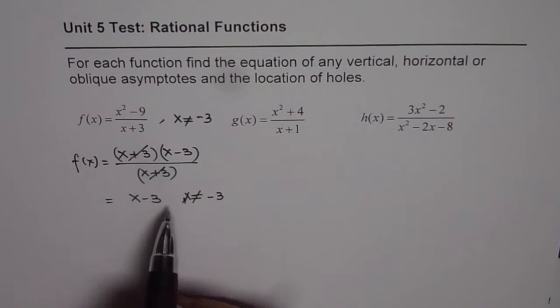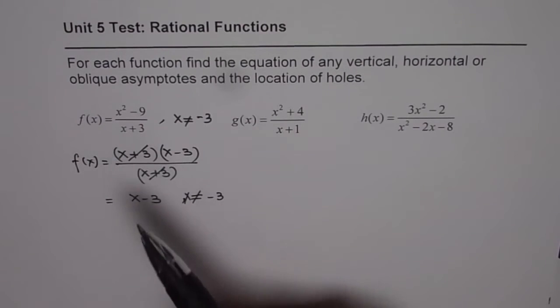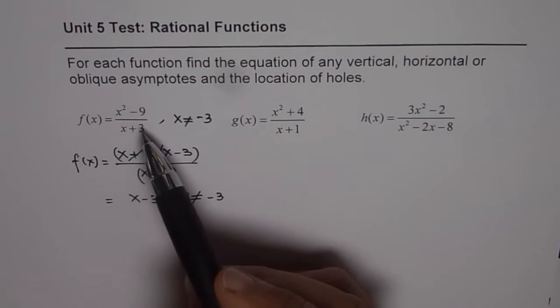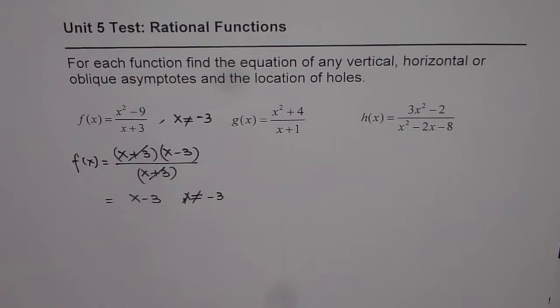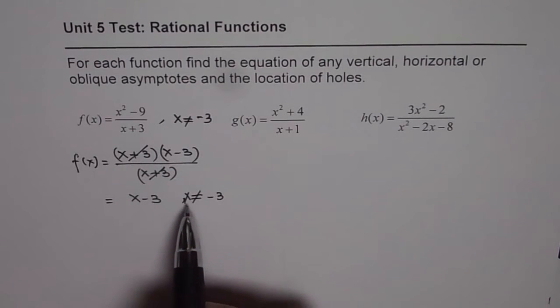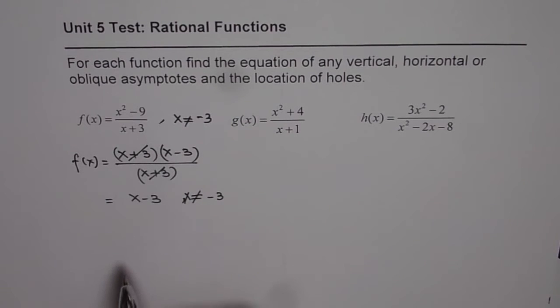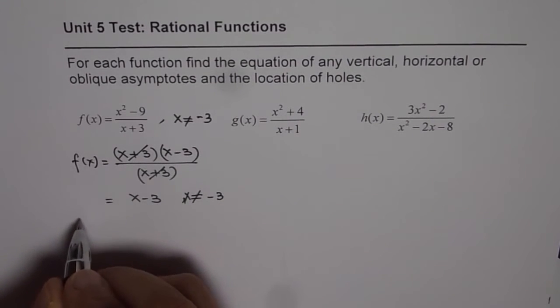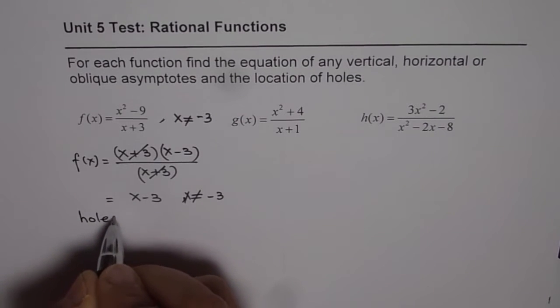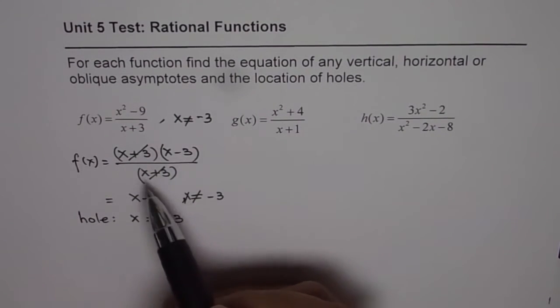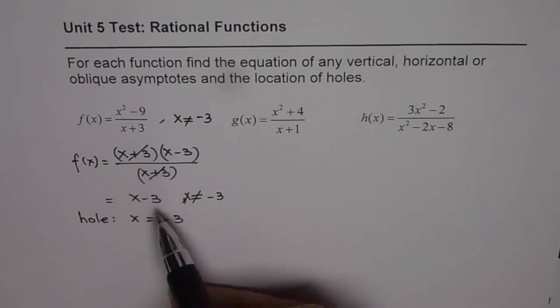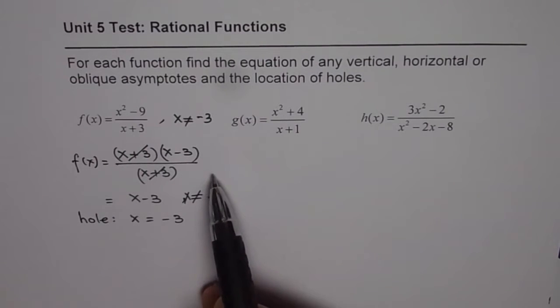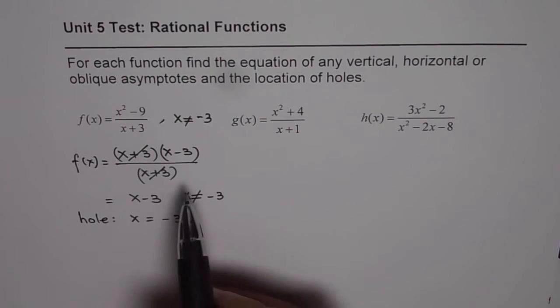That means there is no oblique asymptote. So we cannot really conclude to the decision that whenever the degree is one higher, we have an asymptote. Since the function is actually x minus 3 where x is not equal to minus 3. Now what does that mean? It really means here that we have a hole at x equals to minus 3. So the type of discontinuity here is a hole which is at x equals to minus 3. So whenever you have a common factor in numerator and denominator that leads to hole. Now when that factor cancels out and if you have no other factor in the denominator, we will not have any vertical asymptote.